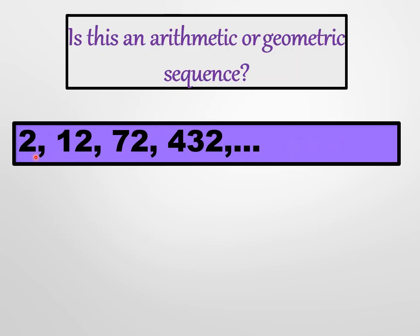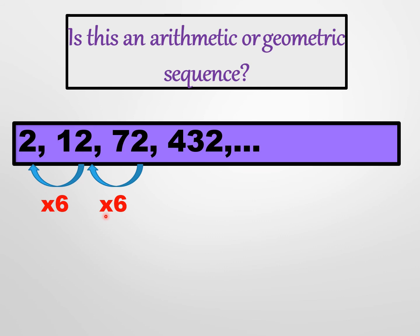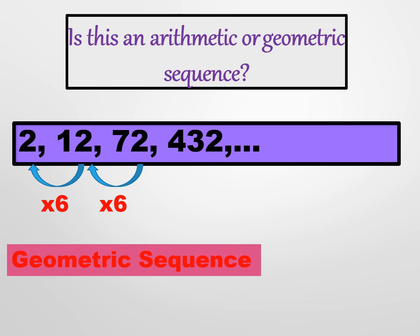Another example: 2, 12, 72, 432. We need to verify if it is arithmetic or geometric. The increase is very fast, so let's check if it's geometric. 12 divided by 2 equals 6; 72 divided by 12 equals 6; and 432 divided by 72 also equals 6. Since we have a common ratio of 6, this sequence is a geometric sequence.